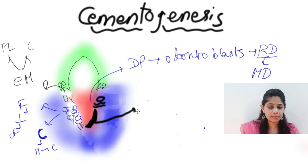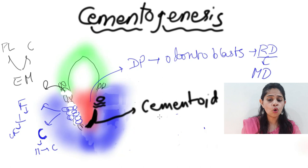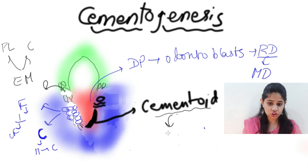In the second phase of cementogenesis, there is calcification of the cementoid tissue. Calcium ions are deposited onto the cementoid tissue, forming the mature cementum.